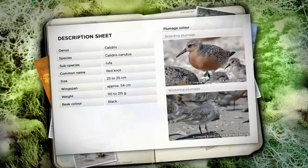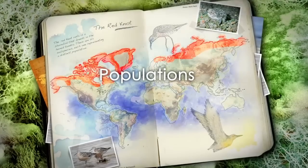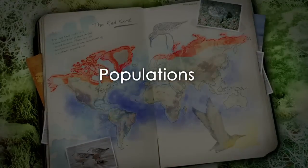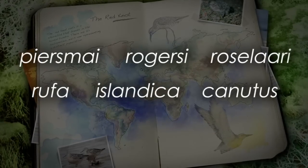The Red Knot Rufa is a shorebird that breeds in the humid tundra. There are six subspecies, each one representing a distinct population.